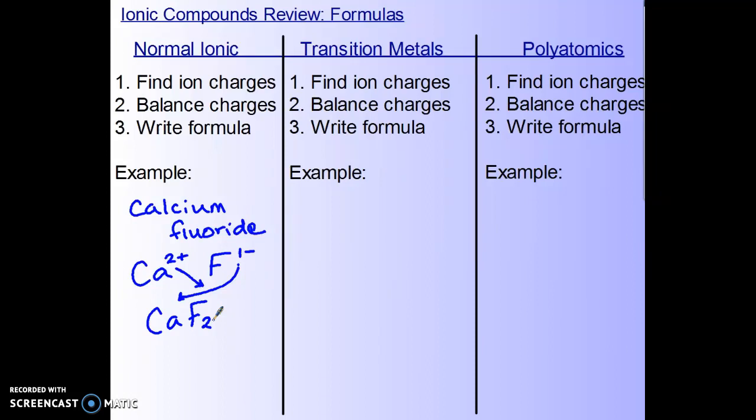When we move to transition metals, the only difference is that the name will give us the name of the transition metal, which we should be able to find in either the D block or the F block of the periodic table, and it will also give us the charge of our transition metal. An example would be Gold(I) oxide. The symbol for gold is Au, and we know from the name here, this Roman numeral 1, that this symbol has a plus 1 charge, so Au is a plus 1 ion.